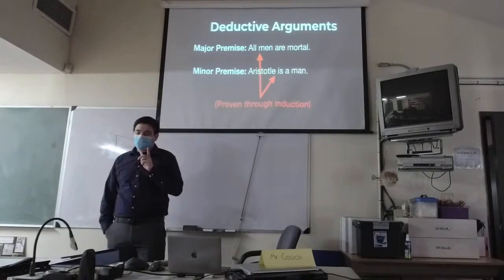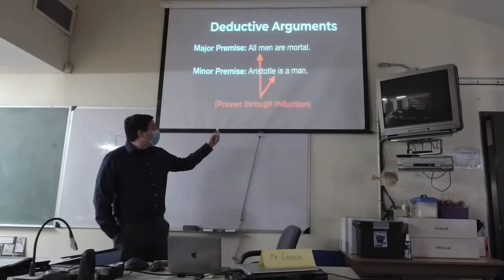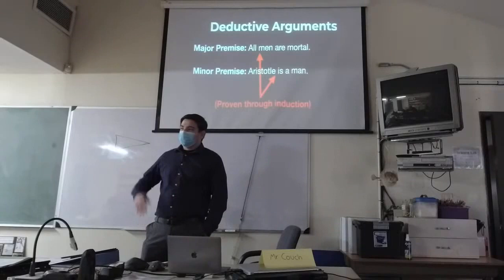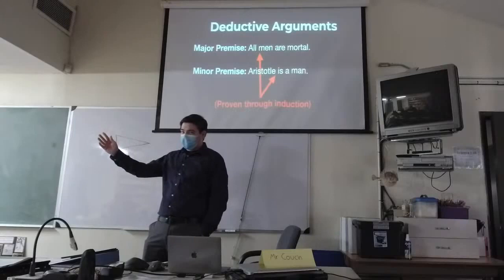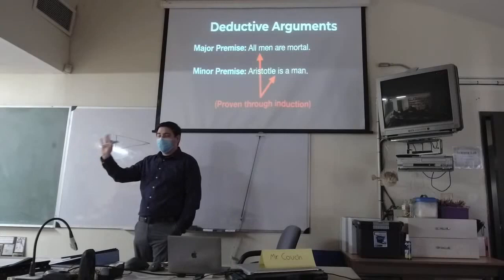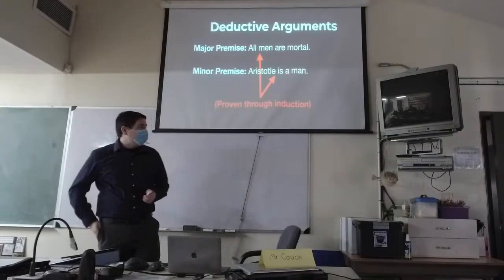What about premise number two — Aristotle's a man — how would we figure this one out? Again, through induction. We would observe him, we would look at him. Can we know this one with 100% certainty? Yeah, I think you can argue that this one could be 100% certain, because you can look specifically at Aristotle, test his DNA, etc. We can't do that now because he's long gone, but you get the idea.